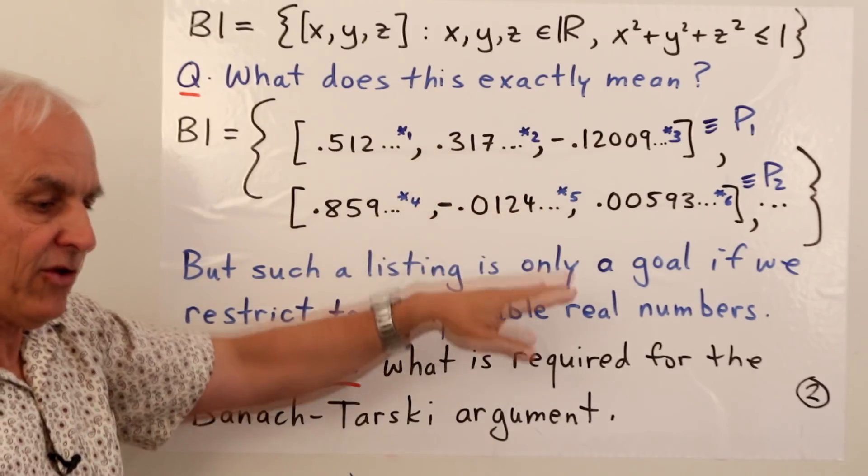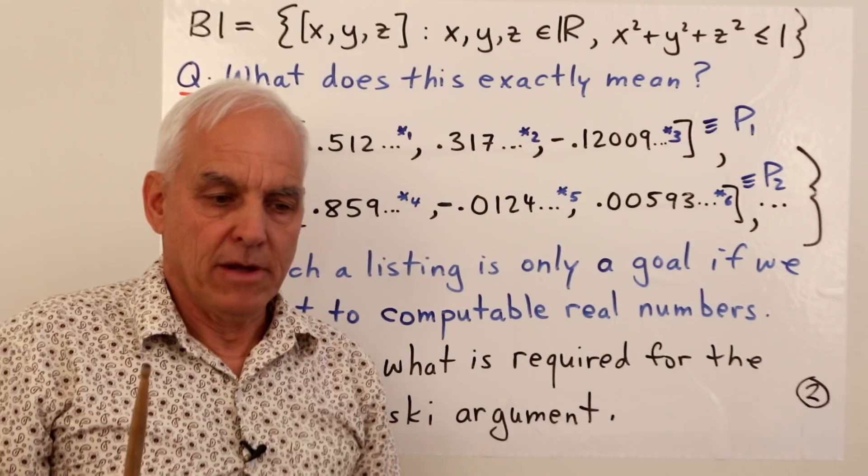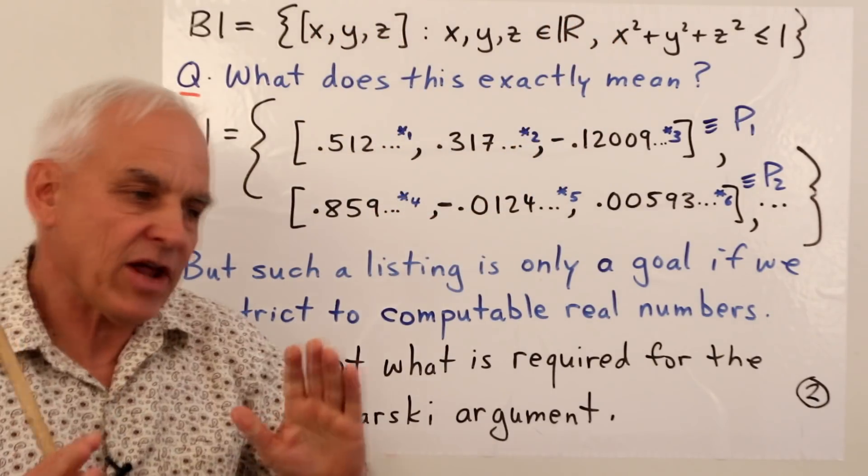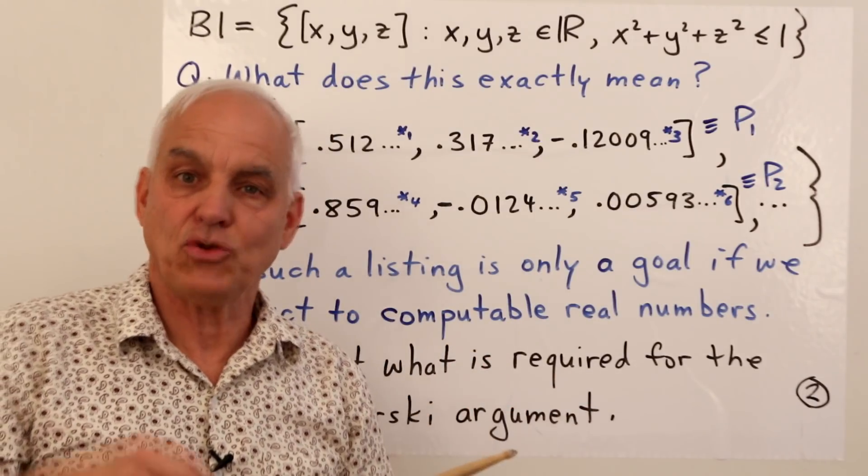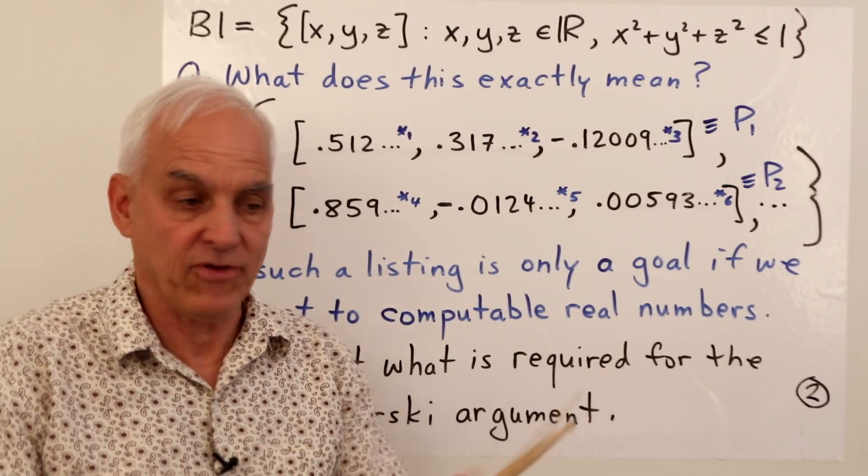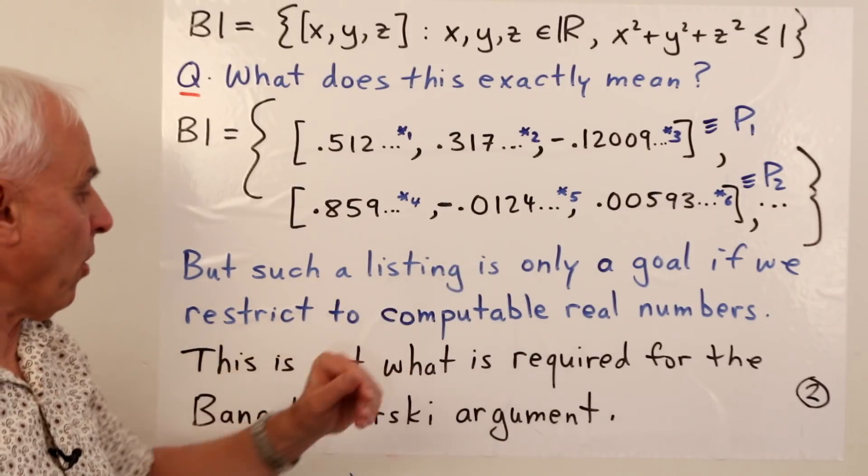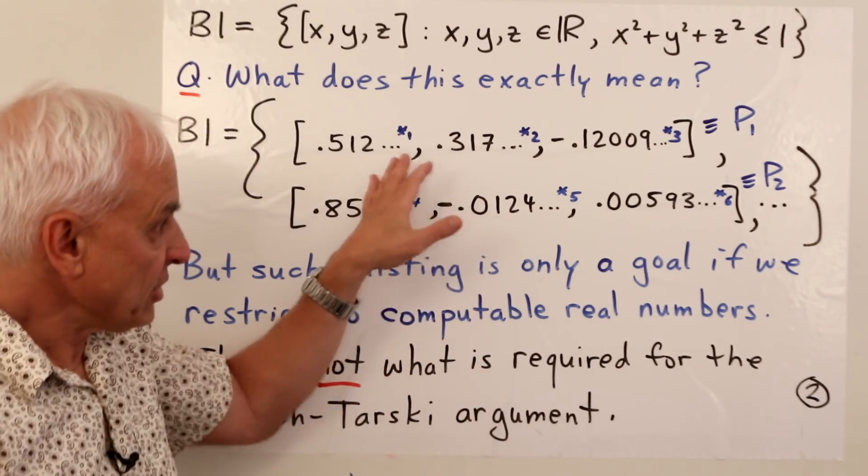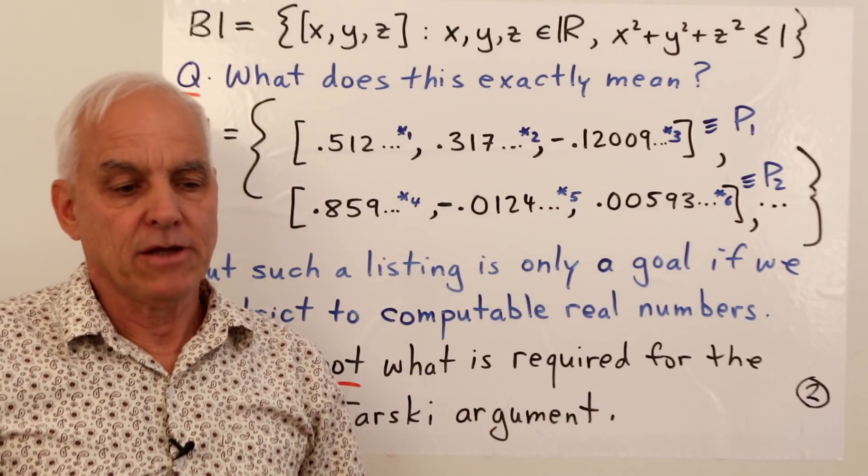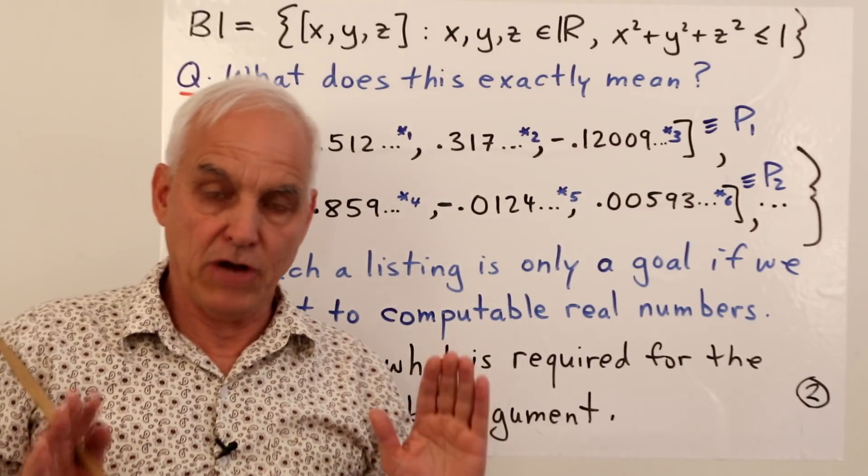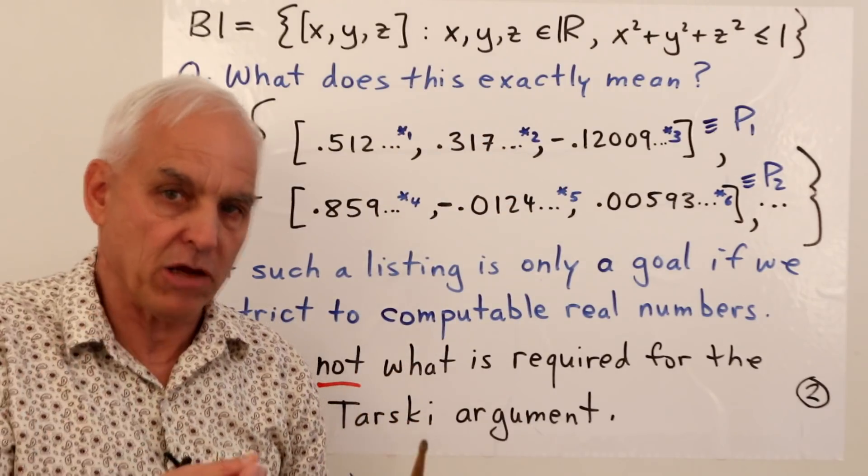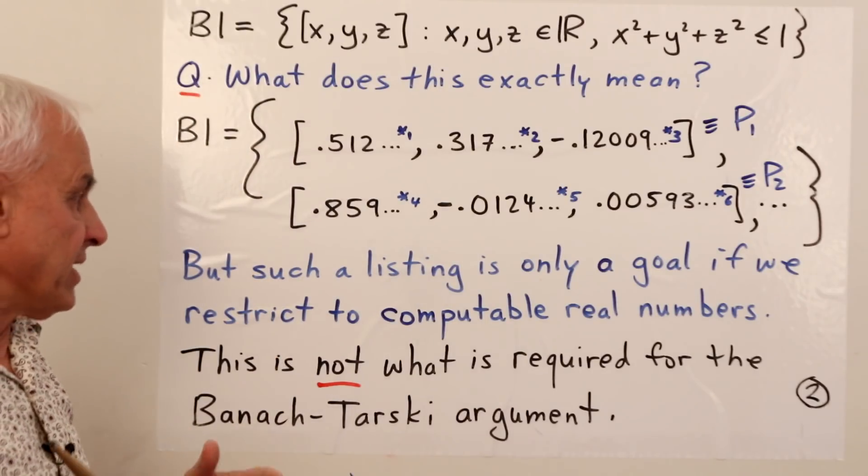Now if we call this one say p1, that's the first point, and then here's p2, the second point, then with this approach we could then potentially list such triples and maybe we could have an argument that we could have every point that satisfies this condition being on this list. So this is kind of one interpretation. It's an interpretation that's oriented towards a computer scientist or engineer that wants things to be tied down to some computation like a computer program somewhere. However, such a listing is only a goal if we restrict to computable real numbers.